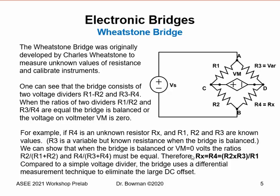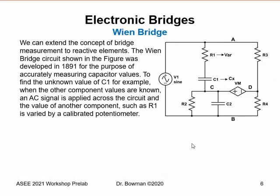From this expression, we can calculate the unknown resistance as Rx = R2 × R3 / R1. When we adjust R3 to balance the bridge, we get no voltage between nodes C and D and can determine the unknown R4. Compared to a simple voltage divider, the bridge uses a differential measurement technique — sometimes called ratiometric — to eliminate the large DC offset that would be associated with a simple voltage divider.